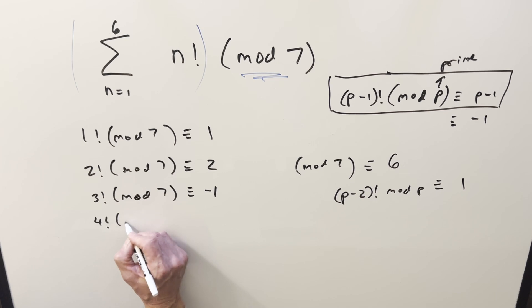4 factorial there is actually kind of a formula with Wilson's theorem I'm going to leave that off though it's a little more complicated so you could do it that way but what we could do is just multiply that out. So 4 factorial is 24 mod 7 equals 3 just because 3 goes in 3 times remainder 3.